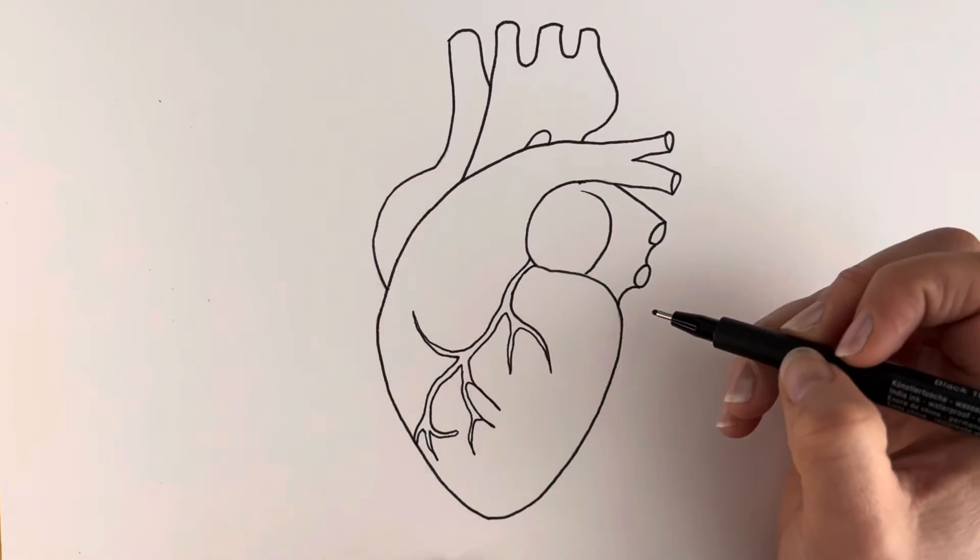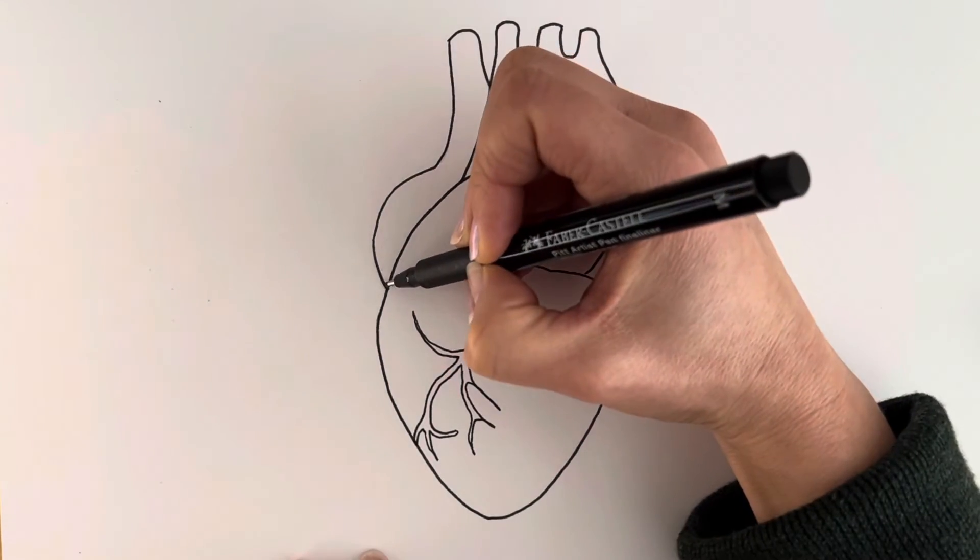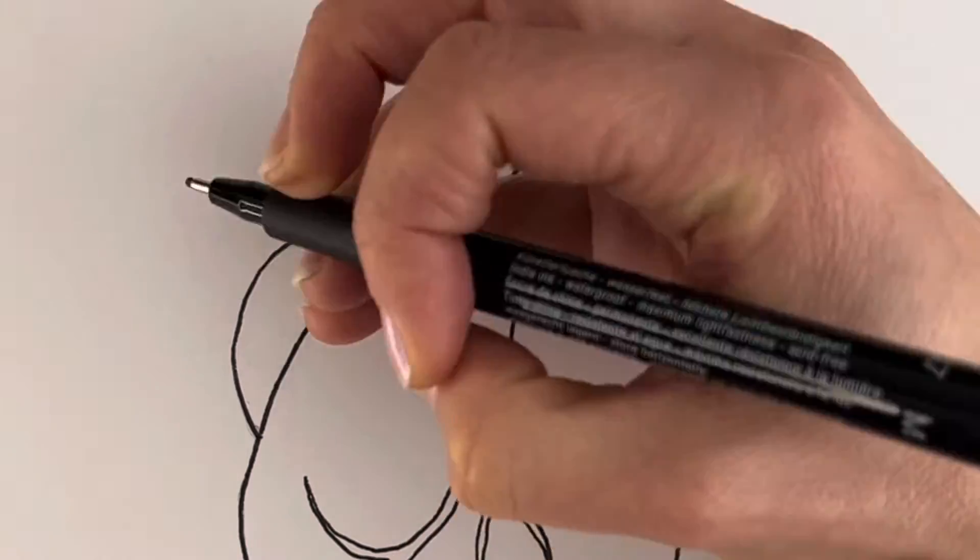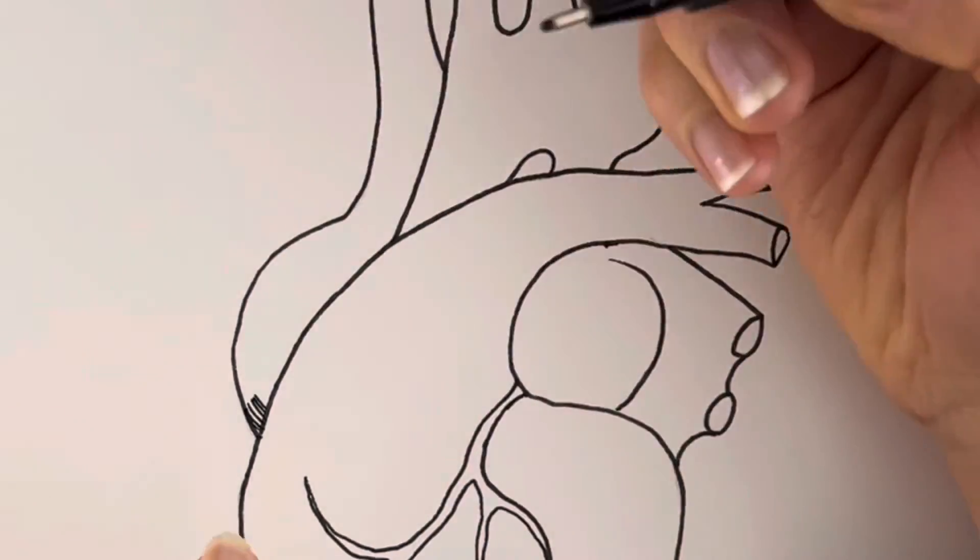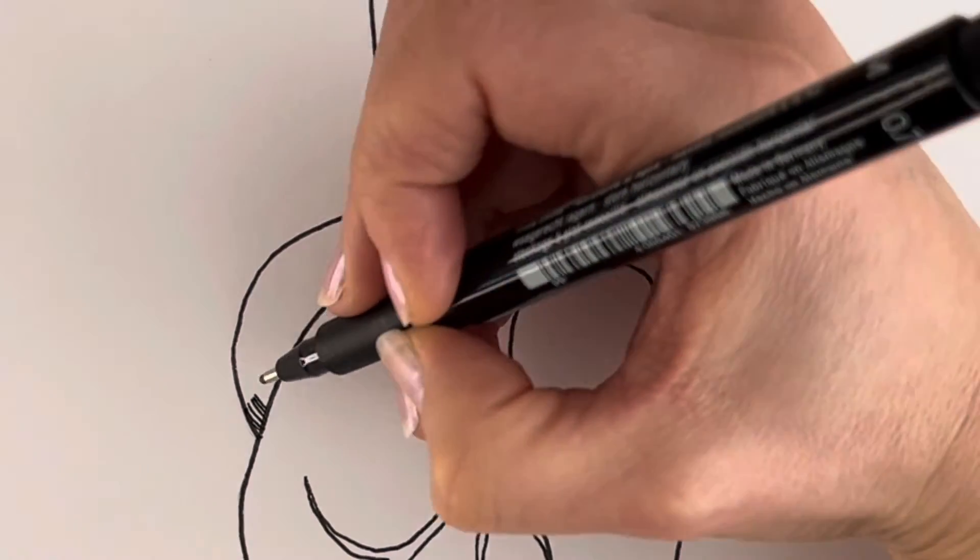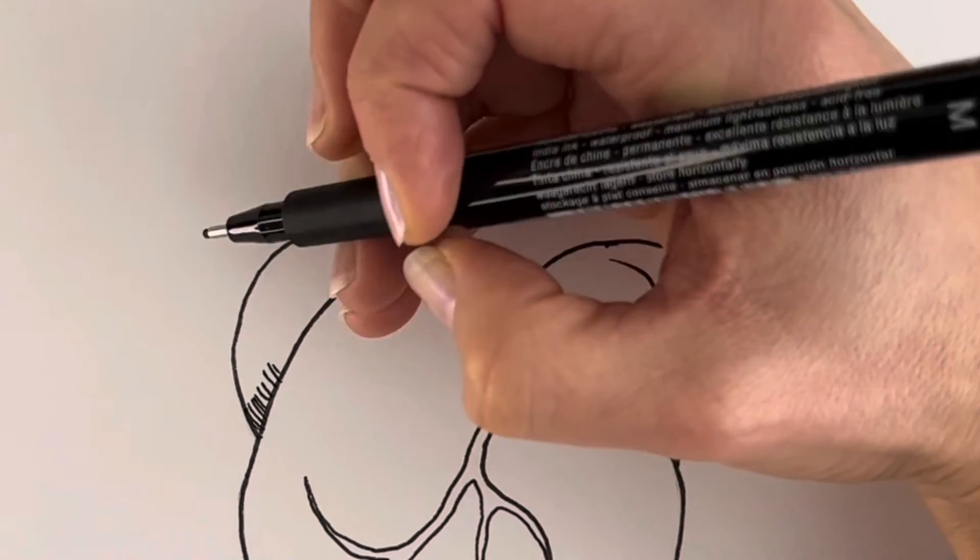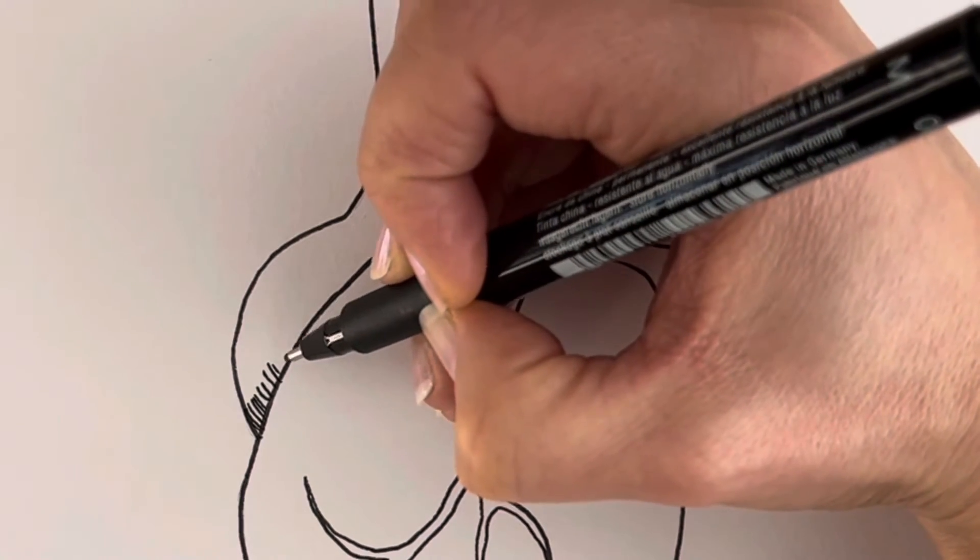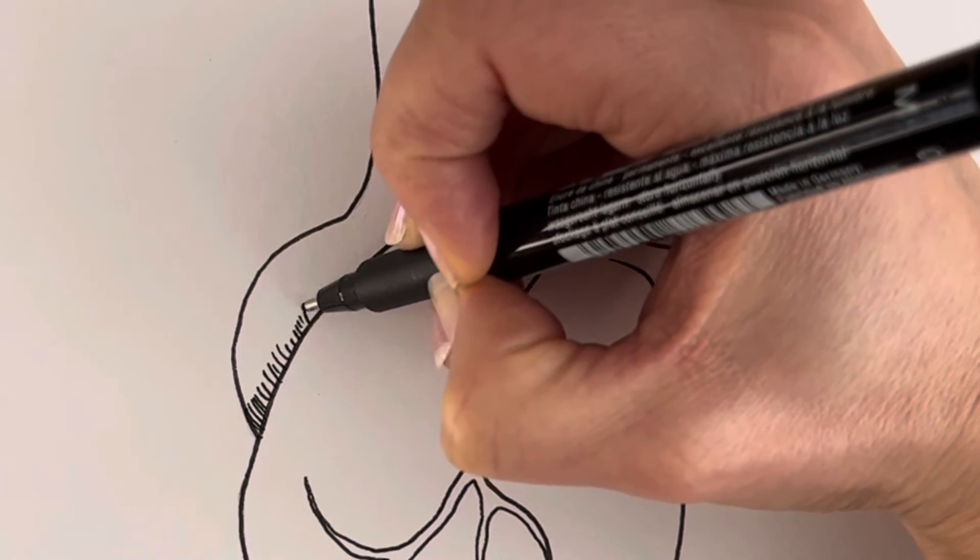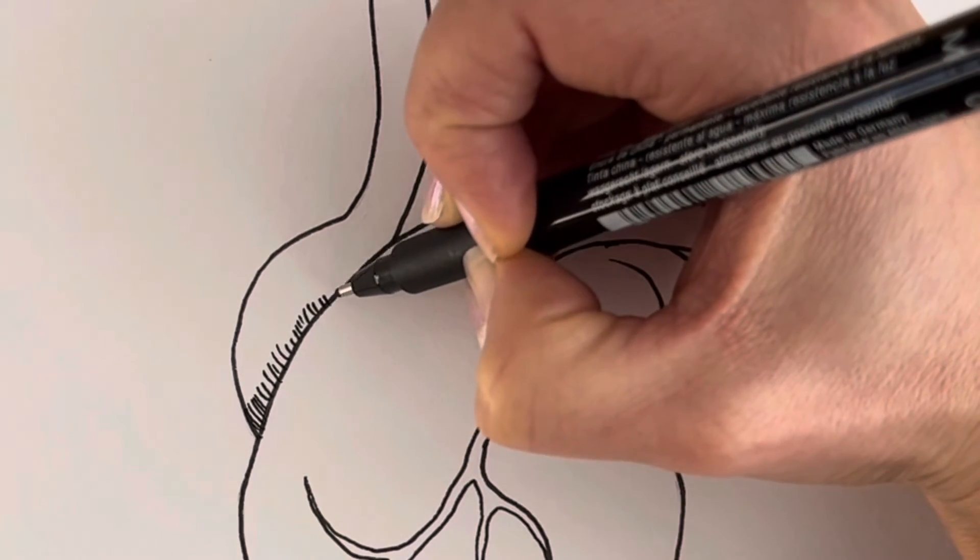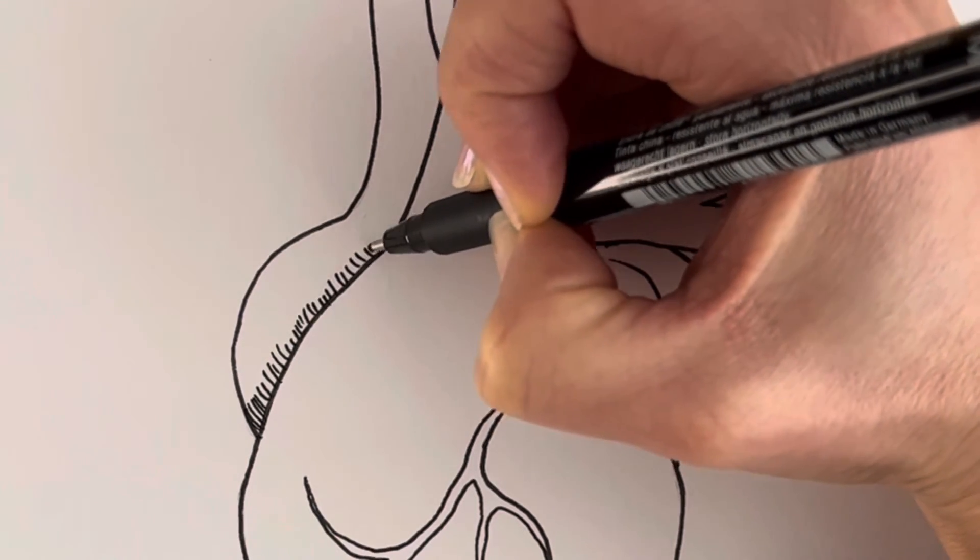So I'm now going to add some shading to make it look a little bit more three-dimensional, and while I'm doing that I'm just going to explain some parts of the heart. So the right side of the heart, this bit, receives the deoxygenated blood from the body and it pumps the blood to the lungs to collect a fresh supply of oxygenated blood. And then the left side of the heart then pumps the blood back round through the body again, the nice oxygenated blood.